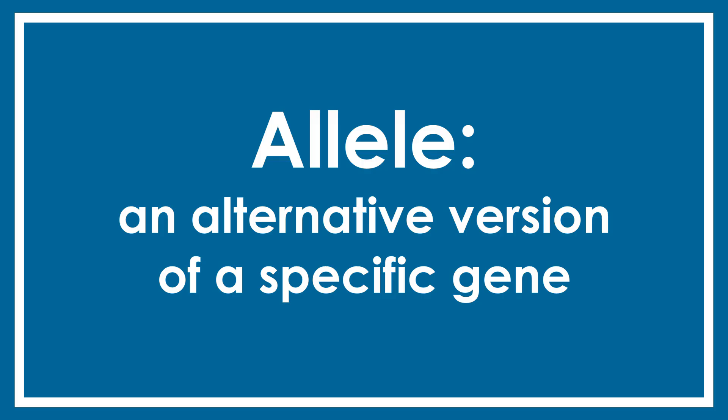An allele is an alternative version of a specific gene. If that sounds confusing, that's okay — it should become clear once we see a simplified example.